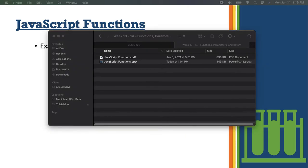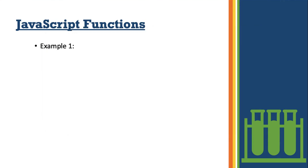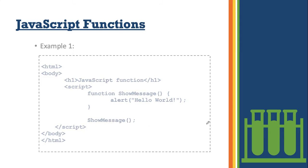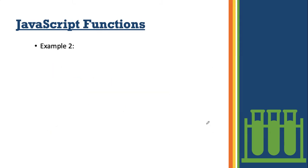We're already done with that part. For our next example — example number two — I will let the user input something, specifically let the user enter his or her name. Then I will create a function that will display the inputted name of the user.